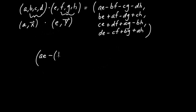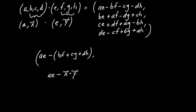Now remember, x was the vector (B, C, D) and y was the vector (F, G, H). What happened was this quantity BF + CG + DH was singled out, and this was renamed the dot product between x and y. So I'm going to rewrite this new scalar part as AE minus the dot product between x and y.